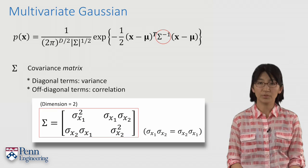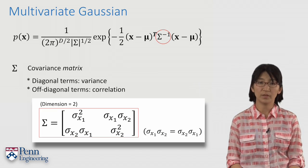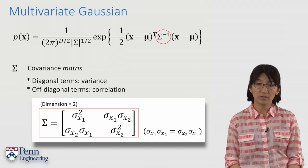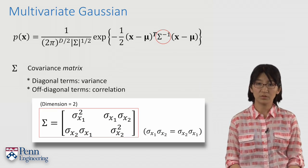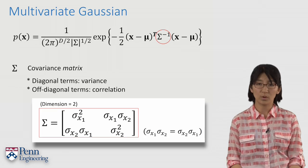Here is an example of a 2D covariance matrix. Diagonal terms are independent variances of each variable x1 and x2.